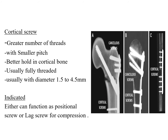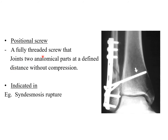The positional screw is a fully threaded screw that joins two anatomical parts at a defined distance without compression. It has no other specific function beyond joining the two parts. It is used, for example, in syndesmosis fracture fixation as seen in X-ray images.